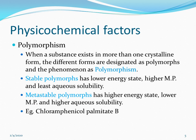Polymorphs are further divided into stable polymorphs and metastable polymorphs. Stable polymorphs have a lower energy state, higher melting point, and least aqueous solubility. Metastable polymorphs have a high energy state, low melting point, and higher aqueous solubility.